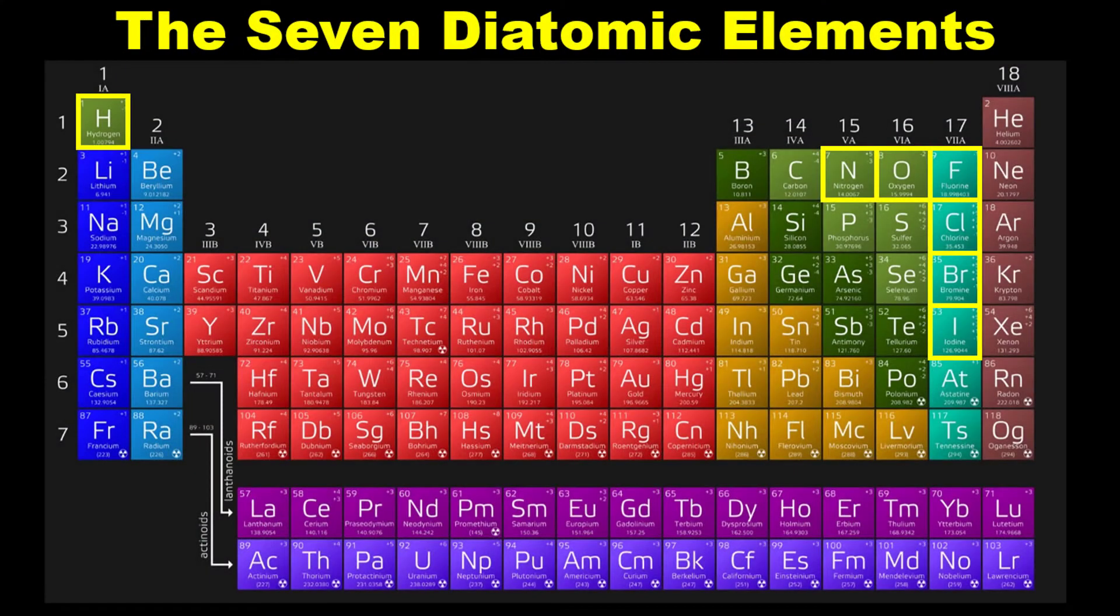However, there are seven specific elements that I taught you in an earlier video linked to in the description below, as well as floating over my head here, that are the diatomic elements. These seven elements do not exist in their neutral state as just that one atom by itself in their formula.